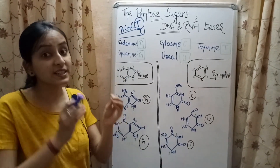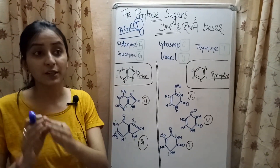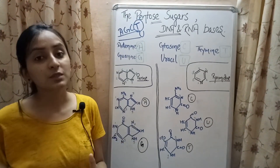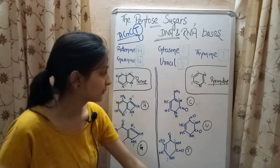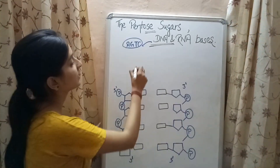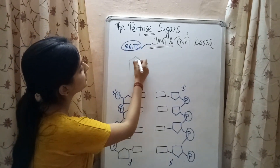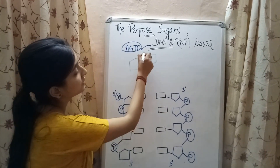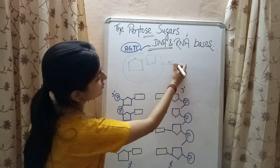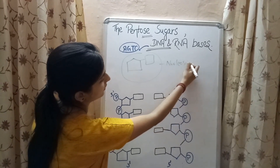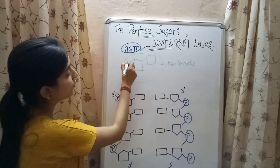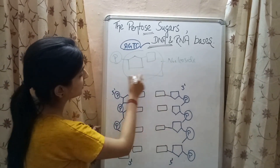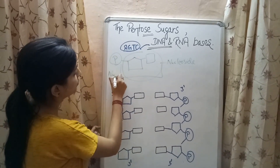When a phosphate group gets attached to a nucleoside, it forms a nucleotide, which are the building blocks of every nucleic acid. Let me explain this with the help of a diagram. This is your pentose sugar to which a nitrogenous base is attached — this structure is known as a nucleoside. When a phosphate group gets attached to a nucleoside, the structure formed is called a nucleotide.